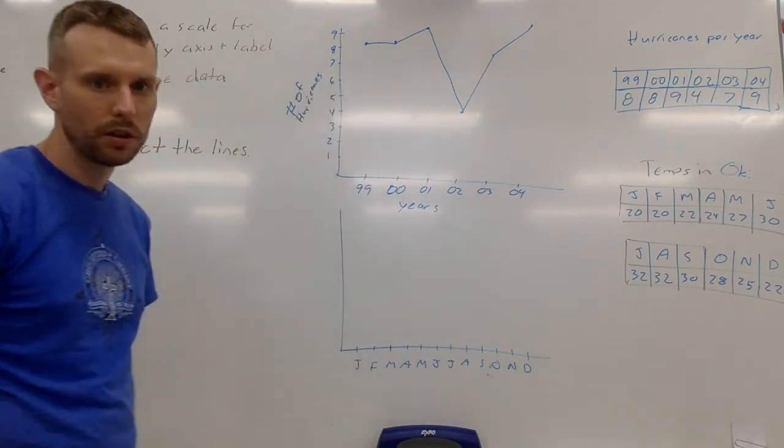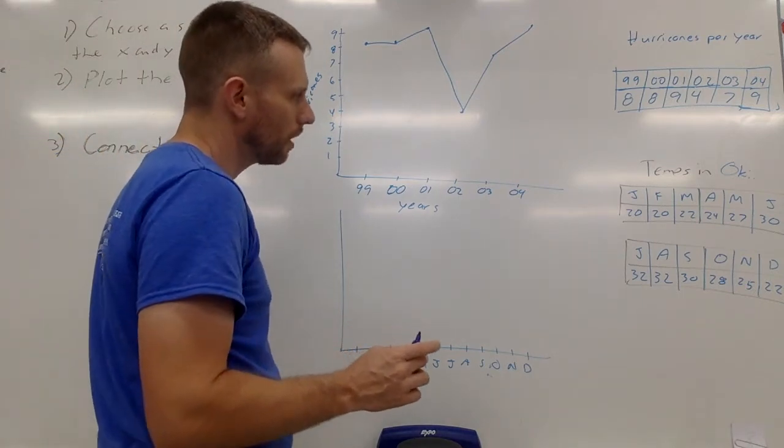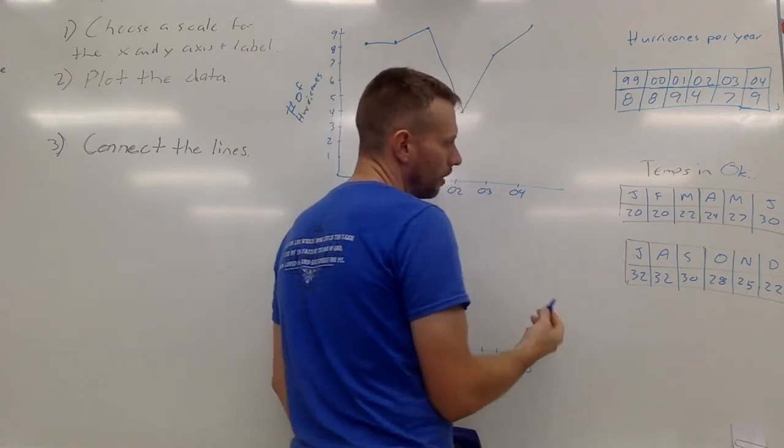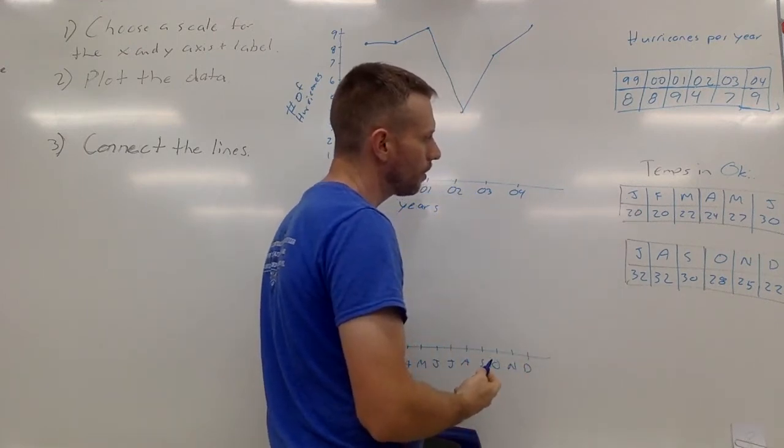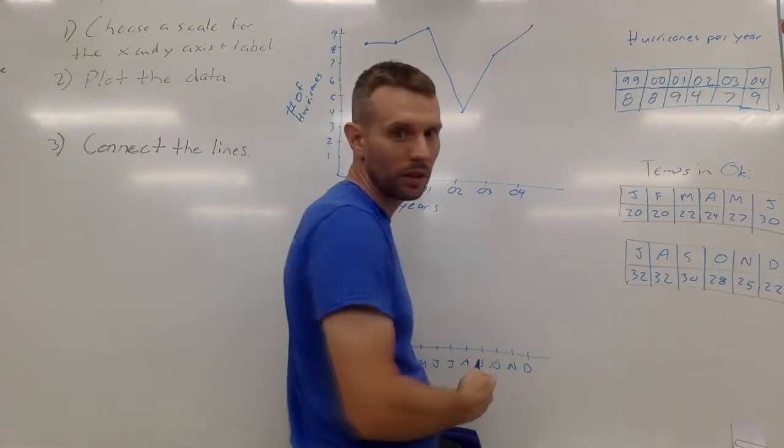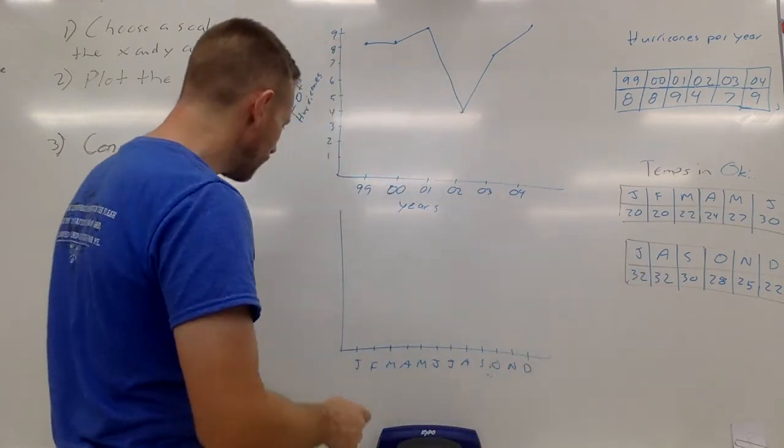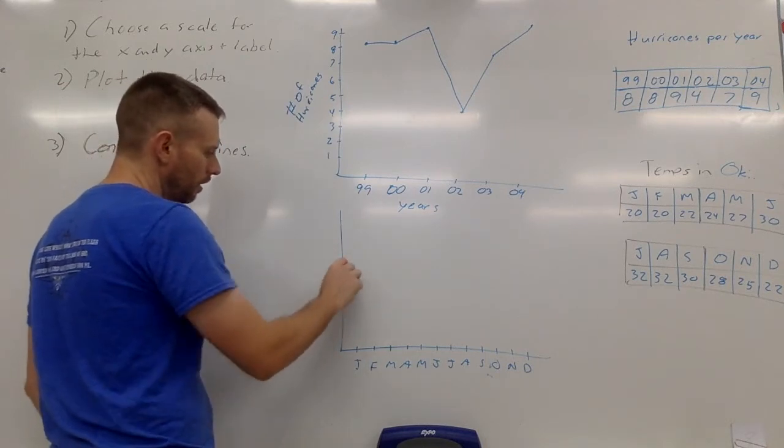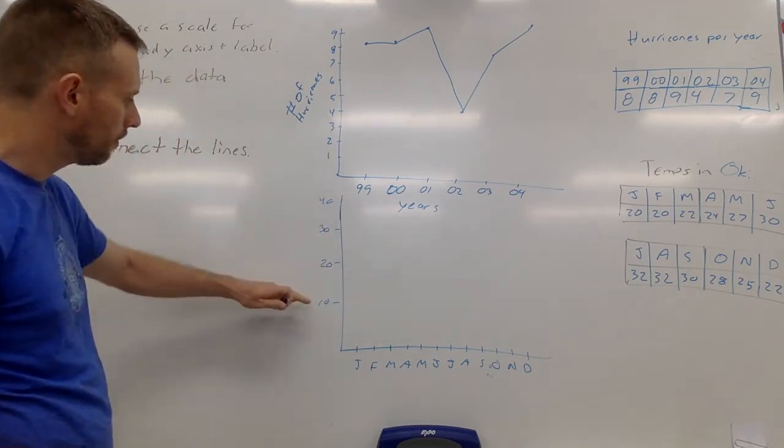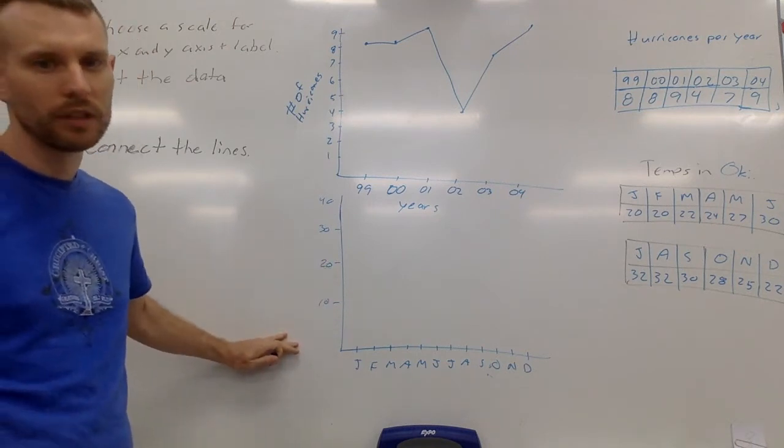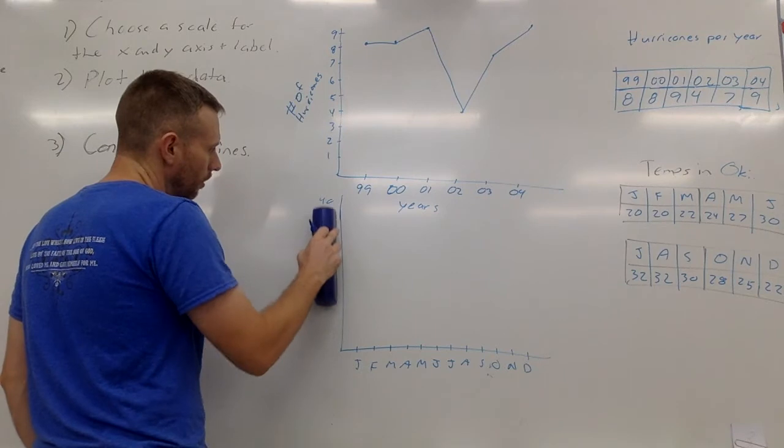You need to use a ruler to make those even. Now this is in Celsius - these are all the highs, the highest average temperatures for these months. The highest average temperature in January was in the 20s, and the highest average temperature in the summer months was 32. So I could go ahead and say, well, let's do 10, 20, 30, 40. But if I was to do that, then I'm not going to use half of my graph. So I'm not going to do that - I'm going to what's called break the graph.